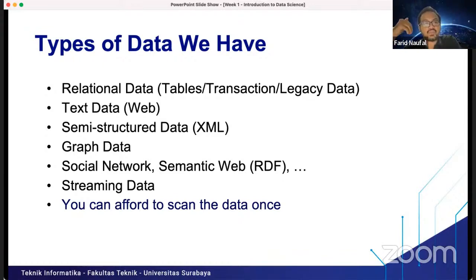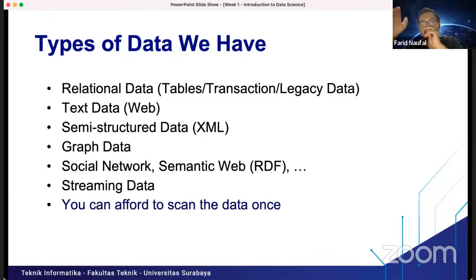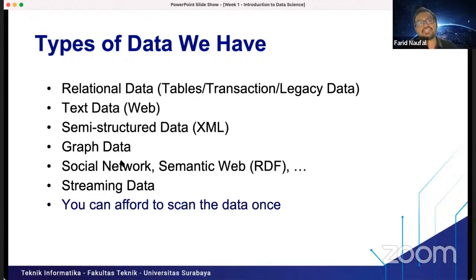Graph data and semantic data (RDF) are connected data that we can use to extract knowledge. It is different from table data. Relational data is structured — tables with columns. Semi-structured data like RDF is similar to XML — data that is connected to each other.